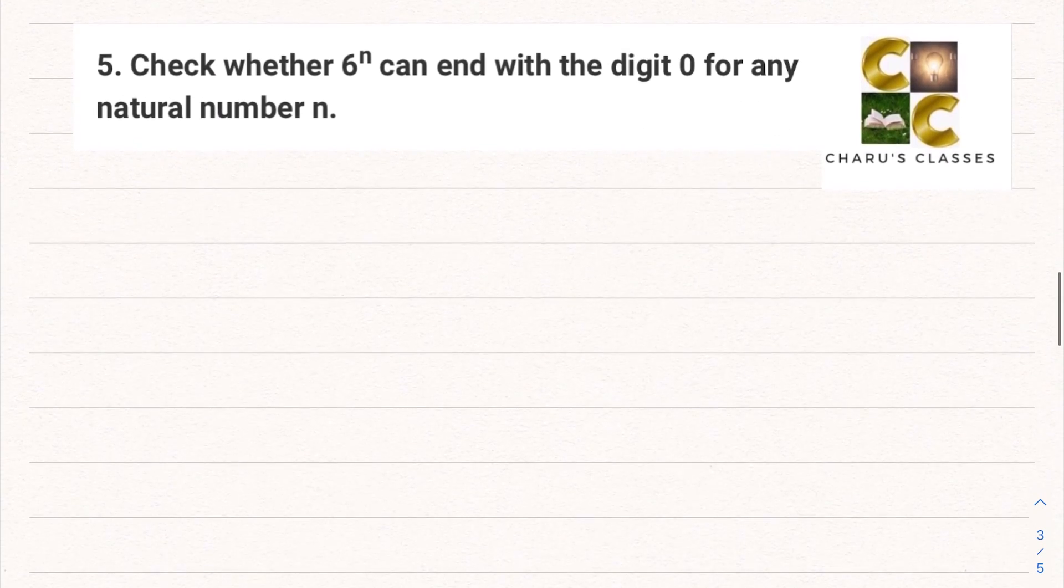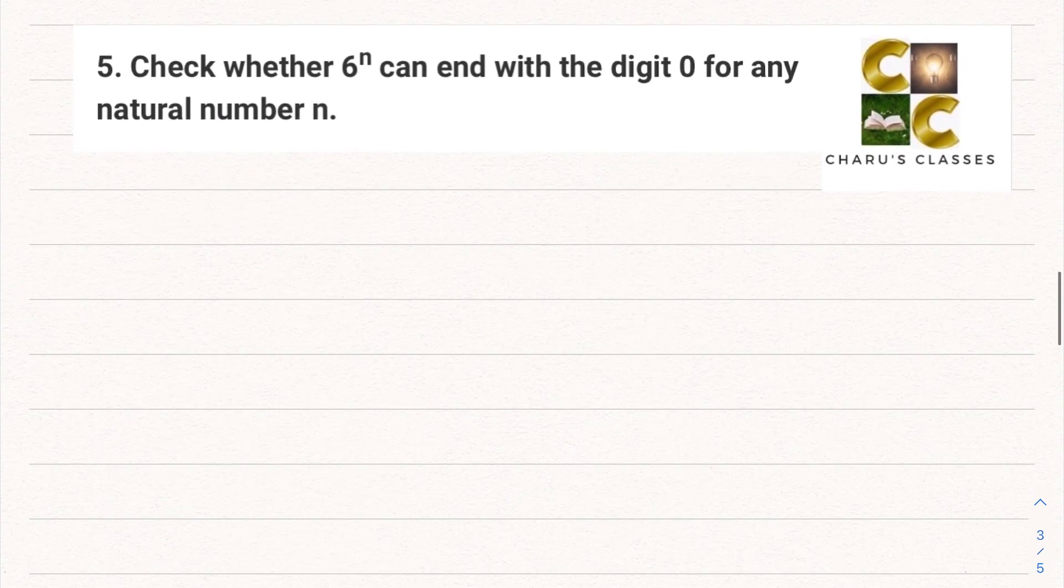Question number five: Check whether 6^n can end with the digit 0 for any natural number n. First, let's understand the question. We have to check whether 6 to the power n, where n is any natural number—1, 2, 3, any number—can end with the digit 0.